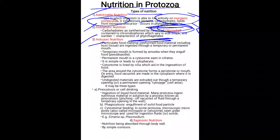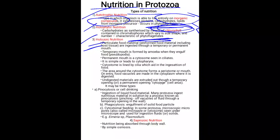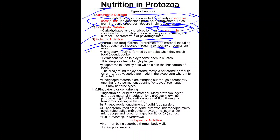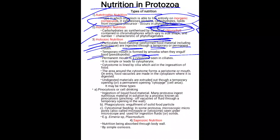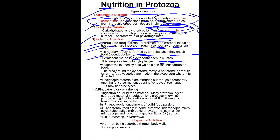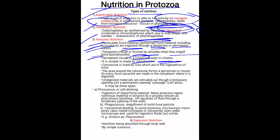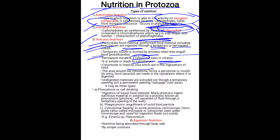In holozoic nutrition, particulate or preformed food material is ingested through a temporary or permanent mouth. The temporary mouth is found in amoeba, which engulfs food by pseudopodia. The permanent mouth is the cytosome, seen in ciliates. The cytosome leads to the cytopharynx and is lined by cilia, which aid in the ingestion of food.